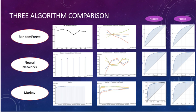Because we cannot test the big training data set for random forest and neural network, we cannot compare these three algorithms fairly. I believe that random forest and neural network will perform better when trained on a big data set. Thank you.